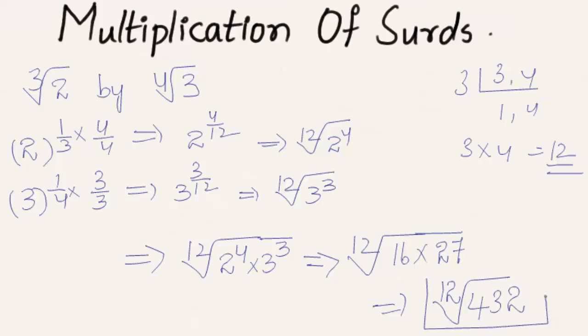So when surds of different orders are multiplied, they must first be converted to the same order by finding the LCM, and then they can be multiplied.